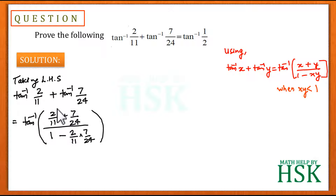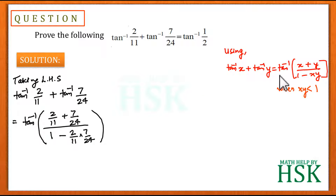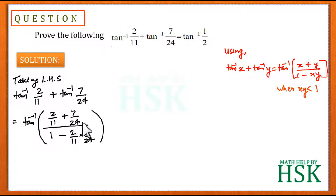So we obtain this value as equal to tan⁻¹ of (2/11 + 7/24) upon (1 − (2/11)·(7/24)). We just place the values of x and y as 2/11 and 7/24 in the formula. Now we can easily add the numerator terms and multiply the denominator terms and solve them.